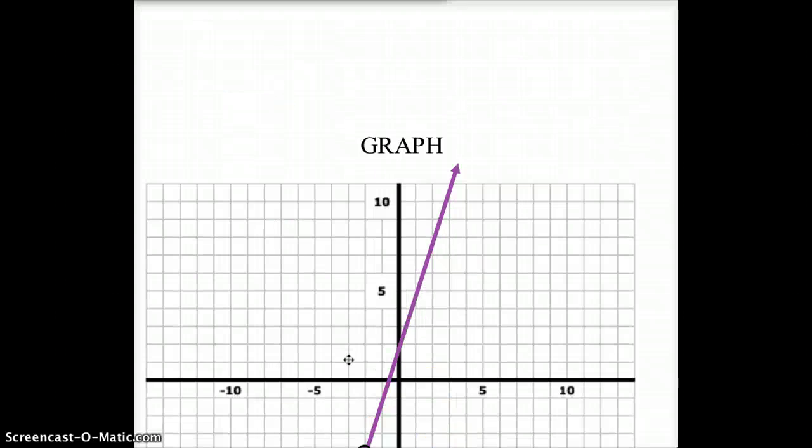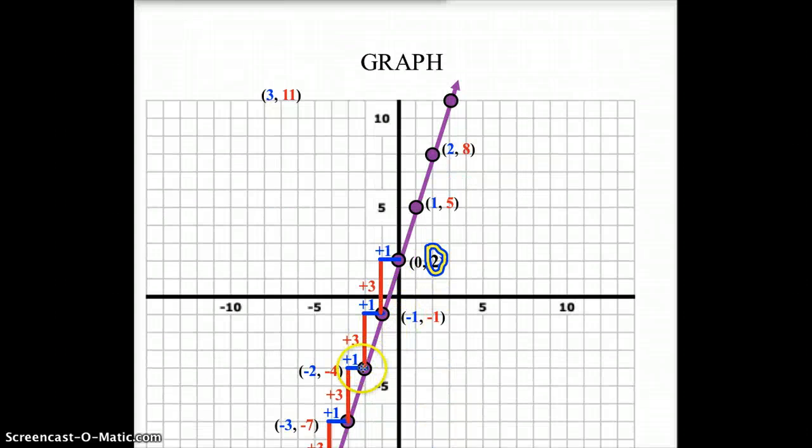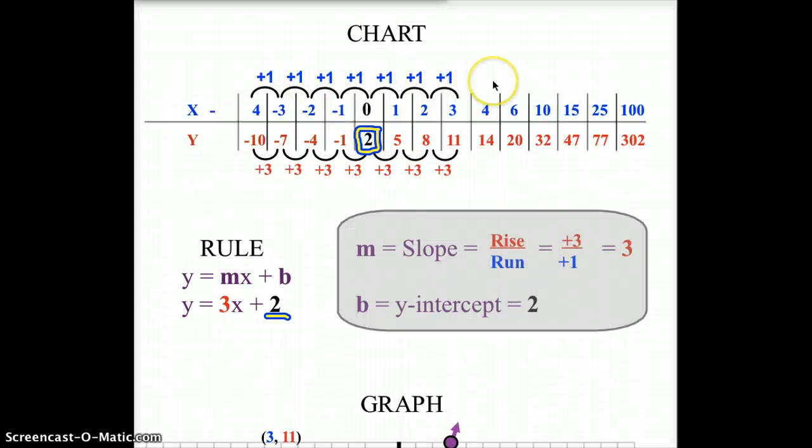If you want to work it backwards and you've been given the graph, you find all these spots where it crosses and you simply plot those onto a chart. Hopefully that makes sense, how you can take charts, move to rules, rules and go to graphs, graphs to go to charts, and backwards, charts to go to graphs, graphs to go to rules, rules to go to charts. This is one you may want to watch over. You may want to make sure you have a very good understanding of this. And it's also one you may want to go back and it's a really good one to review, especially before your tests. We'll talk to you later. Bye-bye.